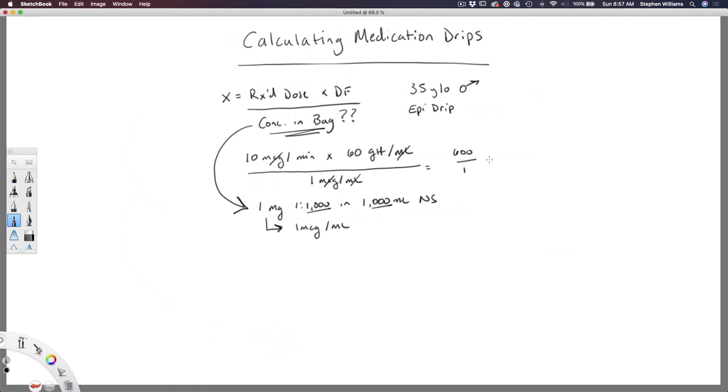So calculating 600 drops per minute is going to be very difficult, especially if you don't have an IV pump. So one thing to consider, especially for the purposes of a test, is to change your drip set to a 10 drop per mil set.